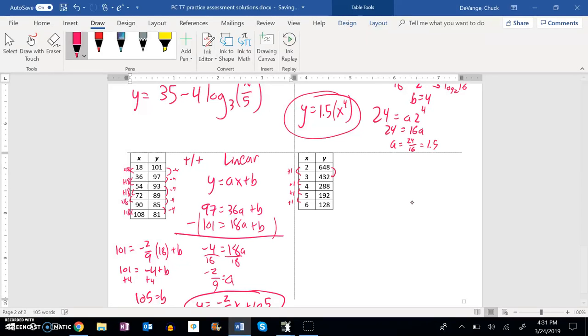And this looks like it's dividing, getting smaller by a fraction. When I divided this by this I got 0.6 repeating, so it's times two-thirds.